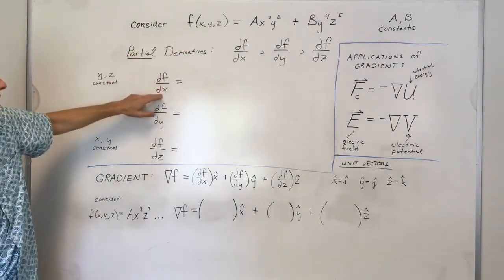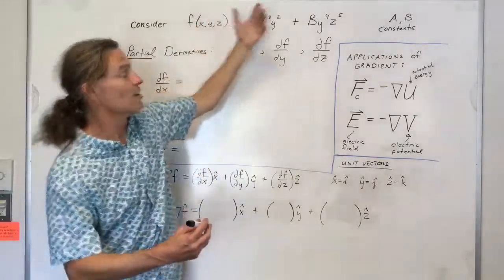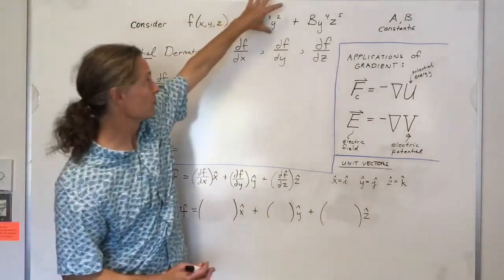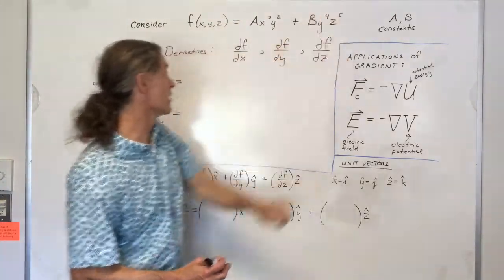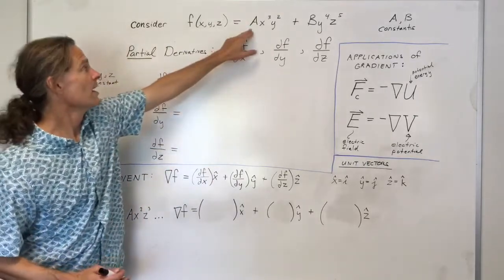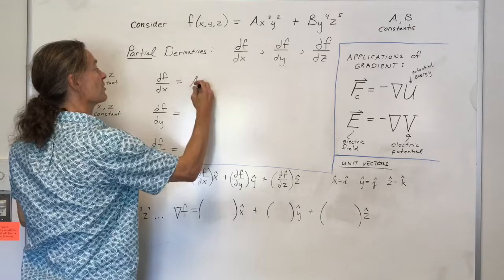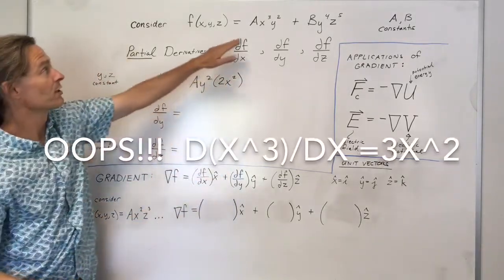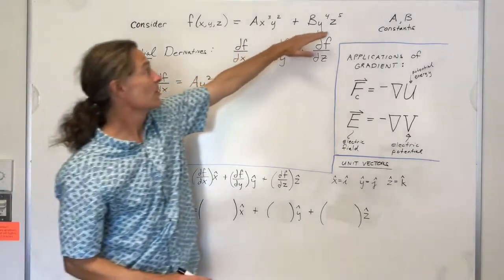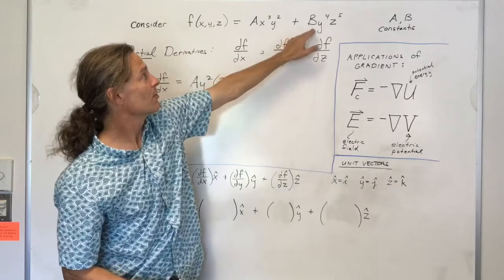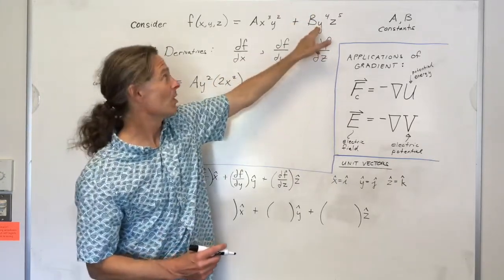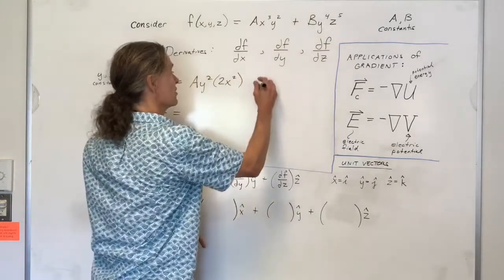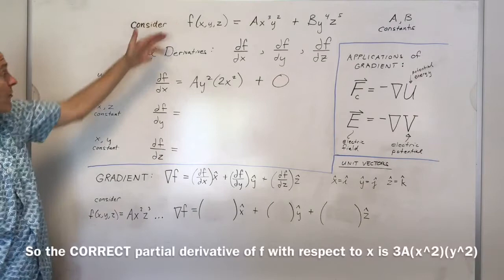For the partial derivative of f with respect to x, we use the same rules for sums and products as with ordinary derivatives. We take the partial derivative of each term. In the first term, a and y squared are constants with respect to x, and the derivative of x cubed with respect to x is 3x squared. For the second term, there are no x's — with respect to x, y, z, and b are all constants — so its derivative is 0.